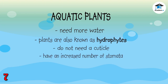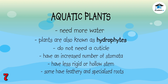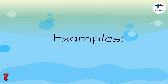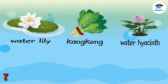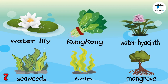The leaves at the water surface usually also have an increased number of stomata, which can be found on either side of a leaf. The stems of aquatic plants are less rigid or hollow than the stems of terrestrial or aerial plants. Some have feathery roots with no need to support the plant; others have specialized roots to take in oxygen or grow deep into the water. Examples of aquatic plants are water lily, kangkong, water hyacinth, seaweeds, kelp, and mangrove.